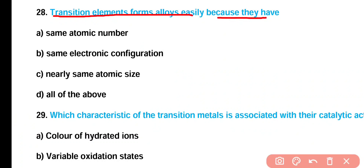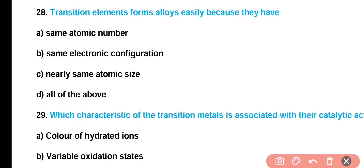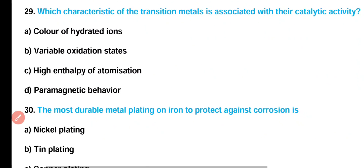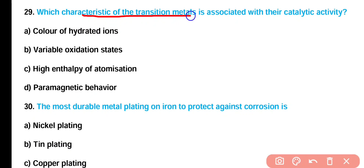Question number 28: Transition metal elements form alloys easily because — (A) they have the same atomic number, (B) same electronic configuration, (C) they have nearly the same atomic size, or (D) all of the above? Correct answer is option C. Transition elements form alloys because they have nearly the same atomic size.